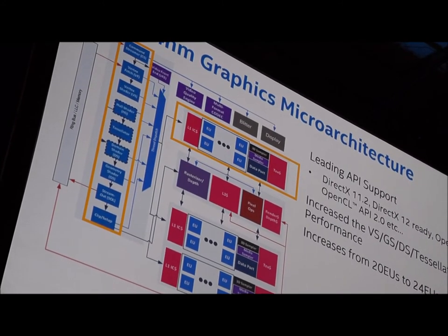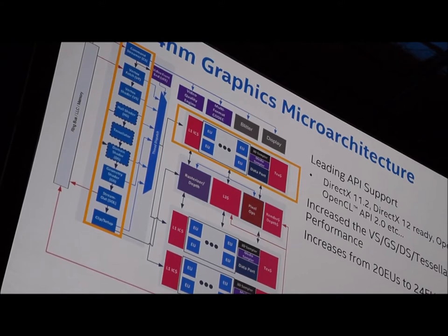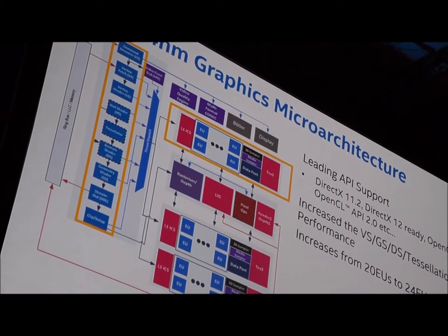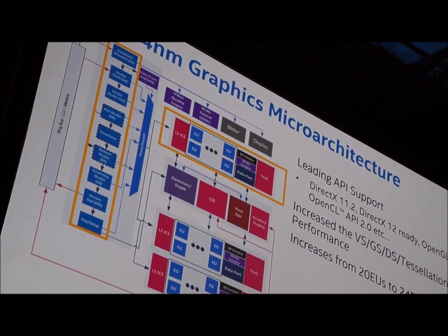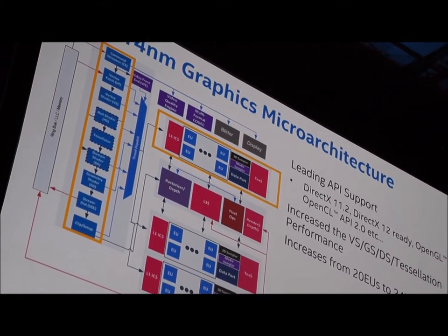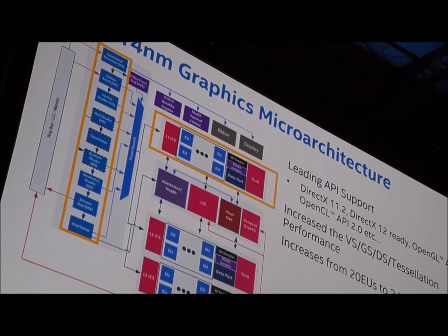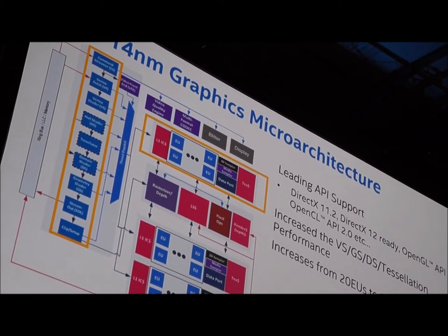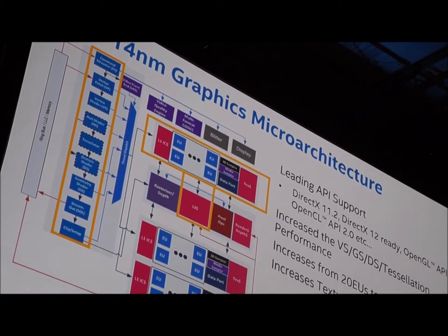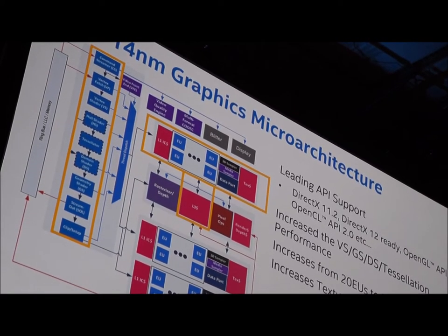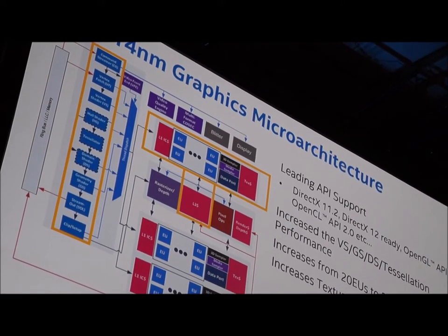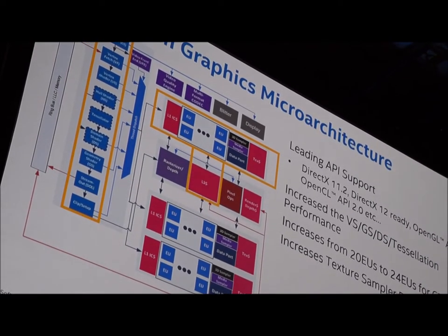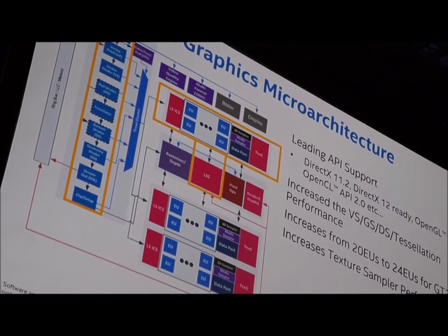In the prior generation, there were 2 subslices with 10 execution units each; in this generation there are 3 subslices with 8 execution units each. For a given slice this increases EUs from 20 to 24, a 20% increase in FLOPS, and because there are 3 subslices, texture sampler performance increases by 50%. Changes to the EU itself include co-issuing of additional instructions such as compare, select, min, and max, and integer throughput in the EU has been doubled.